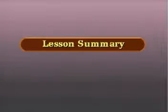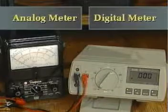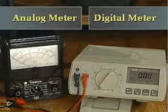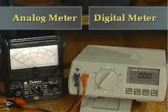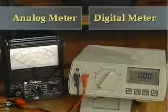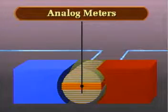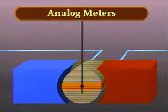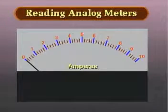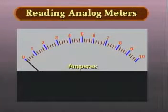Now let's summarize what we've covered in this lesson. We began with a comparison of the advantages and disadvantages of analog and digital meters. We then examined analog meters more closely. We saw how the pointer's reading is proportional to the current through the meter movement, and we looked at how to read linear and nonlinear scales.